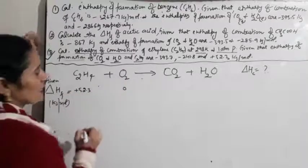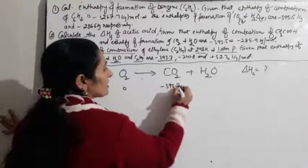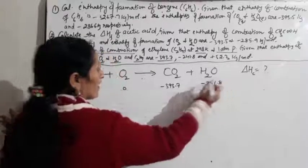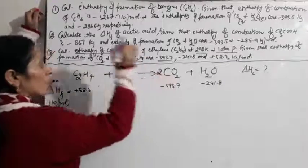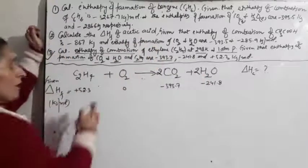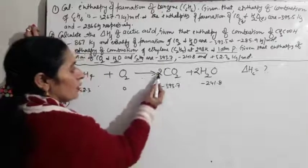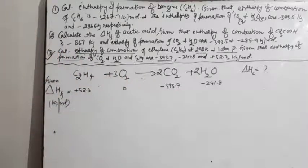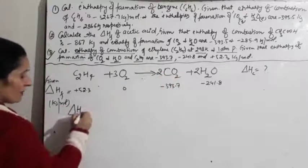Given: delta H°f of C2H4 = +52.3 kJ/mol; O2 = 0; CO2 = −393.7 kJ/mol; H2O = −241.8 kJ/mol. Balancing the equation: C2H4 + 3O2 → 2CO2 + 2H2O. Check: 2 carbons, 4 hydrogens balanced. Oxygen: left side = 6, right side = 4 + 2 = 6. Balanced with coefficient 3 for O2.